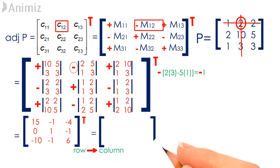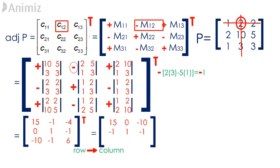In other words, the transpose of the cofactor matrix of P gives us the adjoint of P. Therefore, the adjoint of P is: 15, 0, negative 10, negative 1, 1, negative 1, negative 4, negative 1, 6.